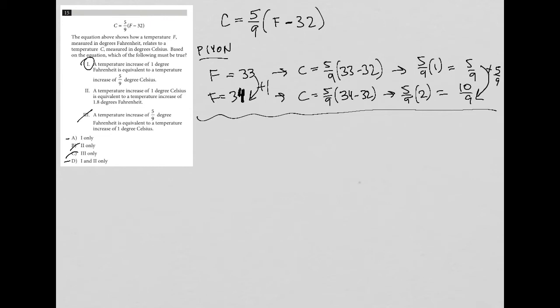So let's see option two. Option two says a temperature increase of one degree Celsius is equivalent to a temperature increase of 1.8 degrees Fahrenheit. Well, let's try that. So again, I'm going to use the exact same plug in your own number method.